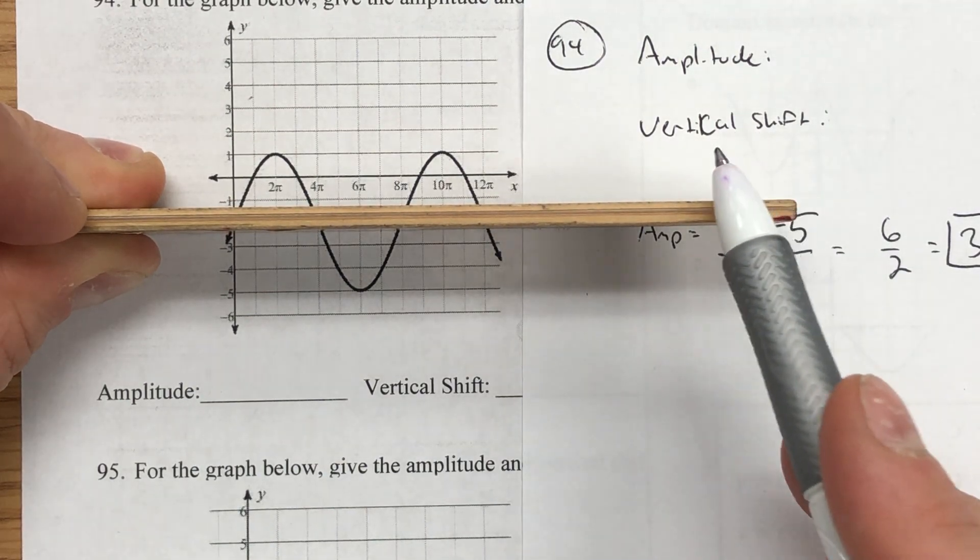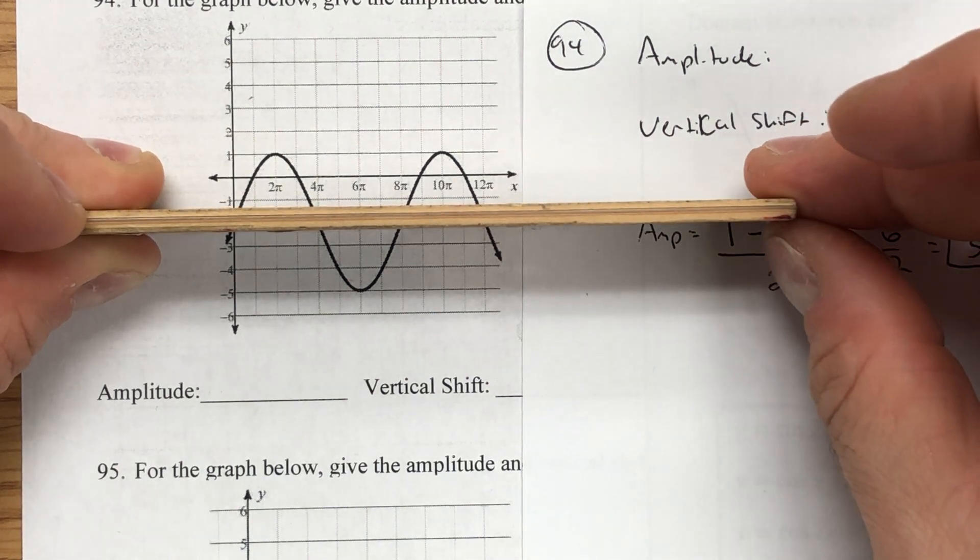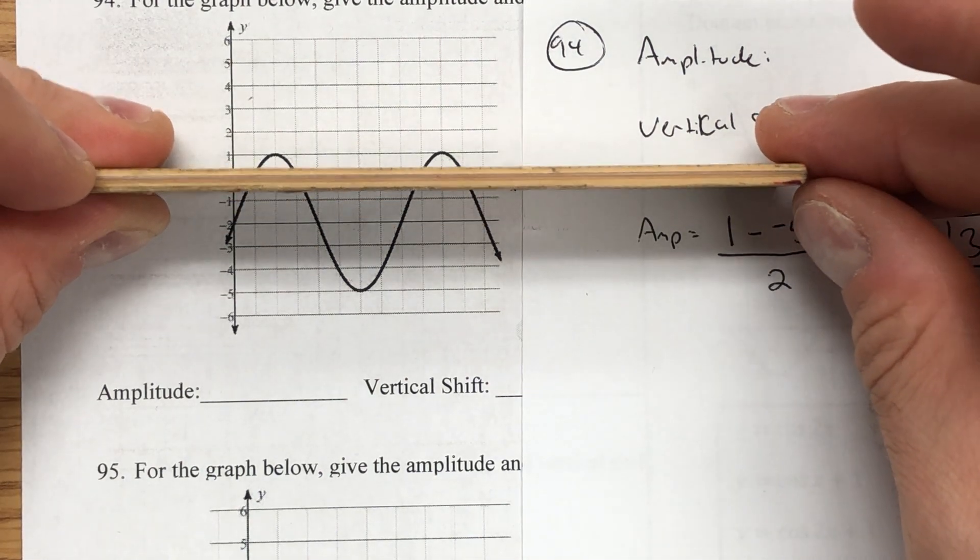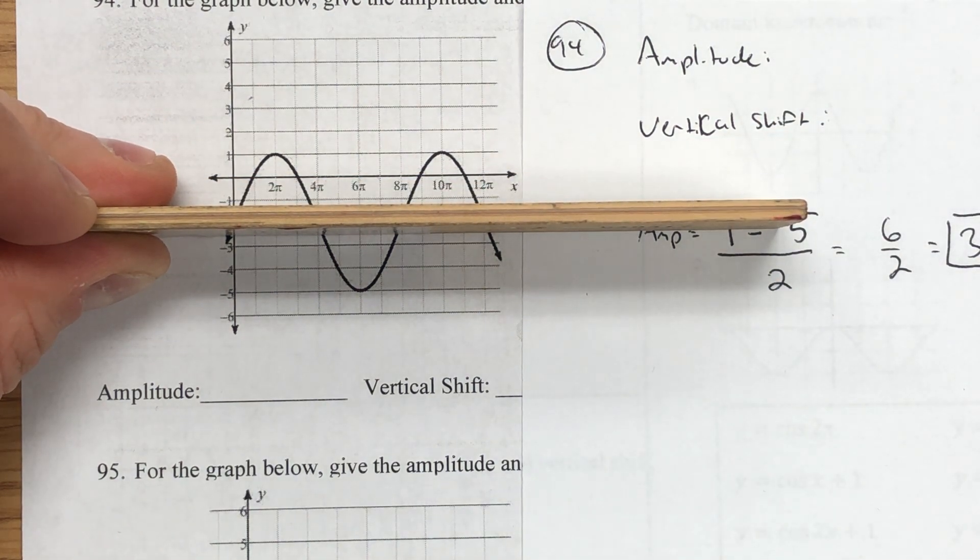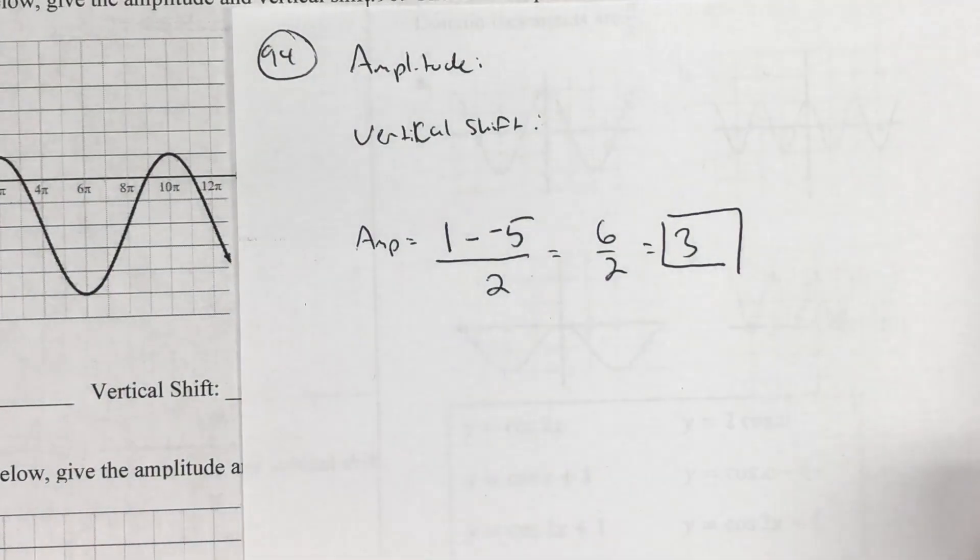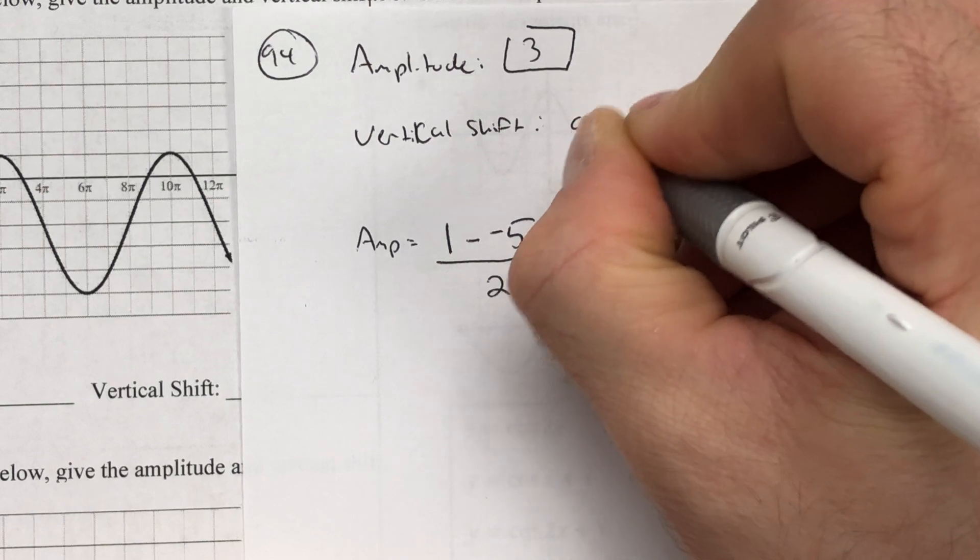Which leads me to my second question: what is the vertical shift? This line normally is in the center of the graph on the x-axis. If I moved it down here, how far down is it? I moved it down 2 units. So the vertical shift is down 2. The amplitude is 3, the vertical shift is down by 2 units. So that is question 94.